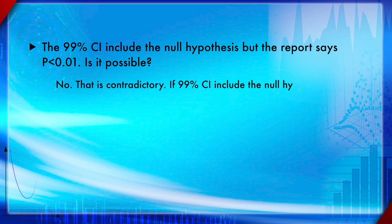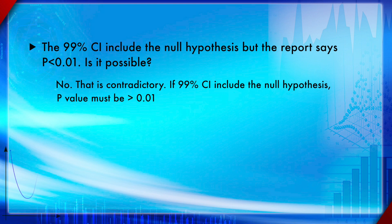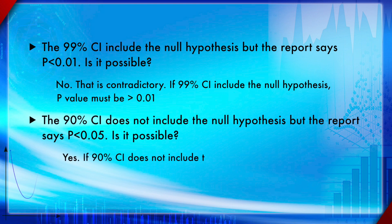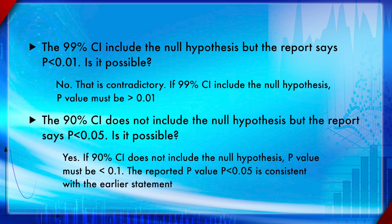If the 99% CI includes the null hypothesis but the report says p-value is less than 0.01, is that possible? No — there is a conflict. If the 99% CI includes the null hypothesis, the p-value must be greater than 0.01, so it can never be less than 0.01. In another example: if the 90% CI does not include the null hypothesis and the report says p-value is less than 0.05, that is perfectly possible — because if the 90% CI excludes the null hypothesis, the p-value must be less than 0.1, so a reported p-value less than 0.05 is consistent.